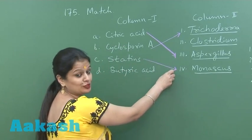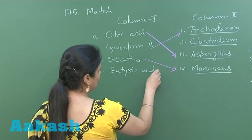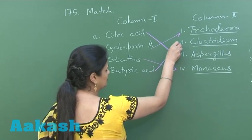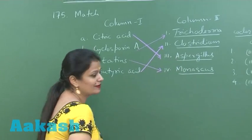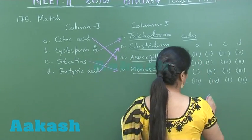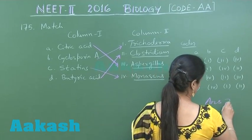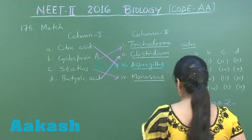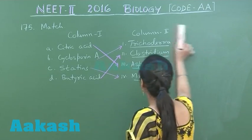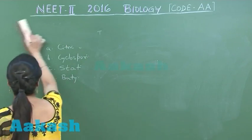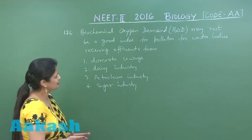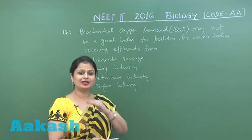Butyric acid is obtained from Clostridium butyricum. So the right option here is option number 2. Let's move on to question number 176.